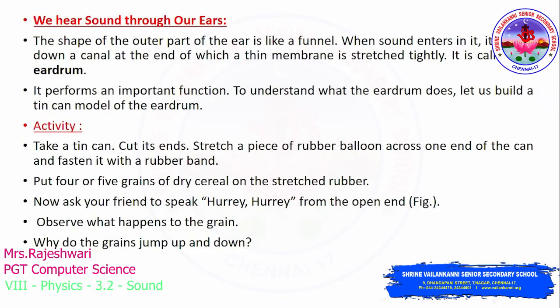Now let us discuss how we hear sound through our ears and how the ear works. In the last class we discussed how the vocal cords — also called the voice box or larynx — produce sound through vibration as air passes through a narrow slit. The shape of the outer part of the ear looks much like a funnel, which we use to pour liquids into a bottle without spilling.